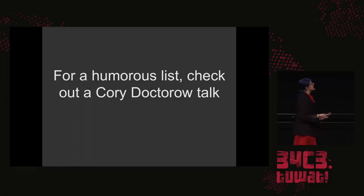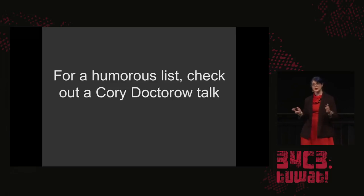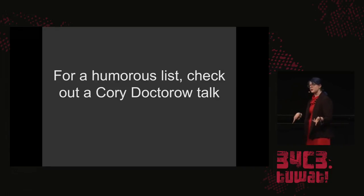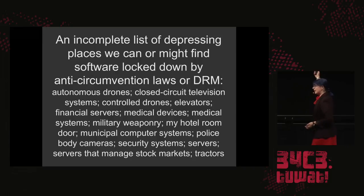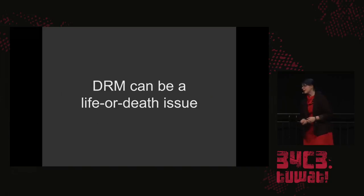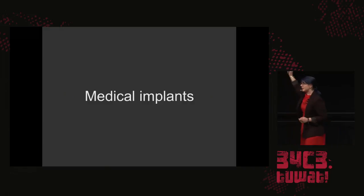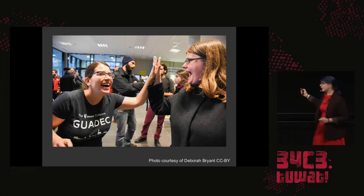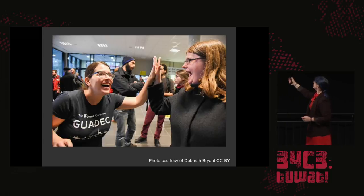So why does this matter? DRM on the web matters because it requires giving up computing freedom. You're being forced to install somebody else's software on your own computer in order to do things you should be able to do otherwise. Where do we find DRM? If you want a humorous list, check out a Cory Doctorow talk — he gave a great one at LibrePlanet in 2017 and another at the previous HOPE. Here's an incomplete list of some depressing places we might find DRM or software lockdown by anti-circumvention laws, including autonomous drones, medical implants, and hotel room doors. DRM can be a life-or-death issue.